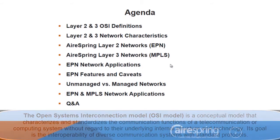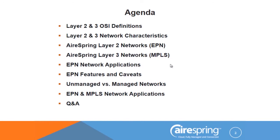Our agenda today takes us through some very generic technical specifications of Layer 2 and Layer 3 Ethernet frames and technology. We're going to look at the definitions — always got to define the terms we use, whether they be nerdy or not. Then we're going to look at the characteristics these networks use a lot, what to stay away from, what they can do, what they can't do. And then we're going to go ahead and apply them.